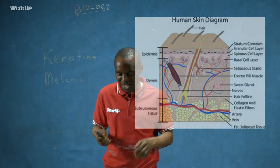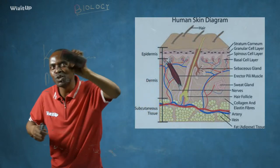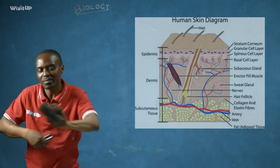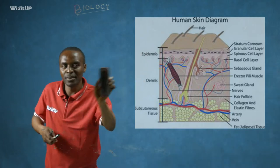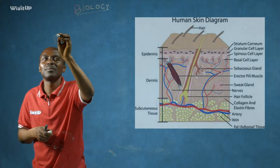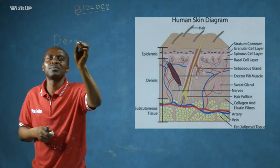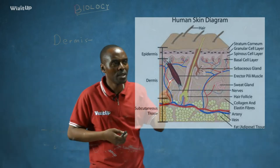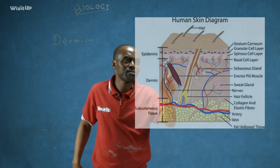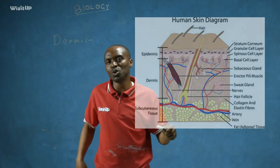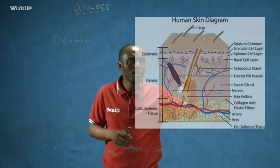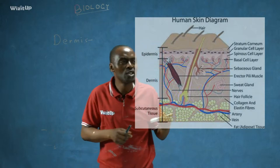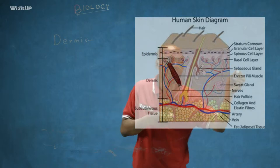The second layer of the skin is the dermis, also called the true skin. Let us look at the components of the dermis. Number one, we start with the sebaceous gland.